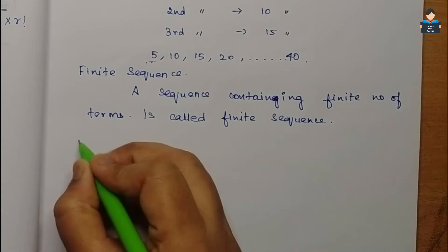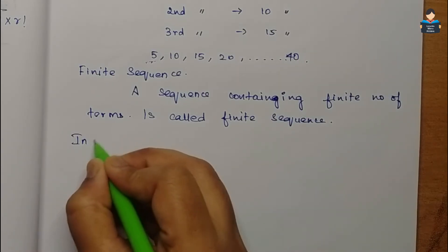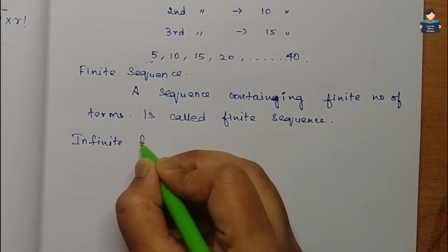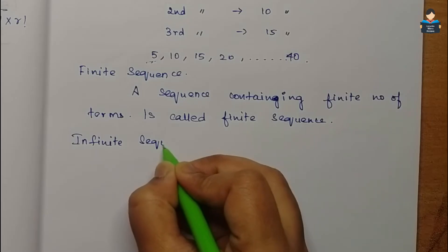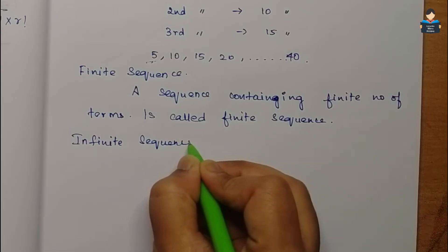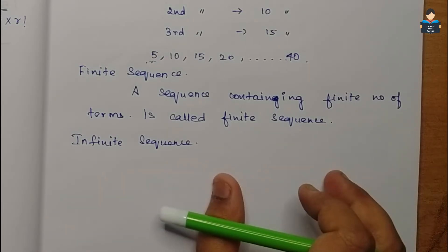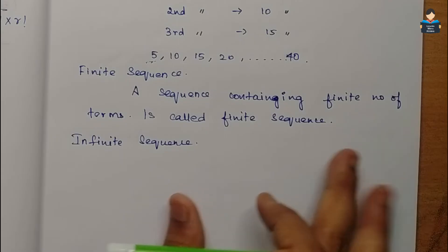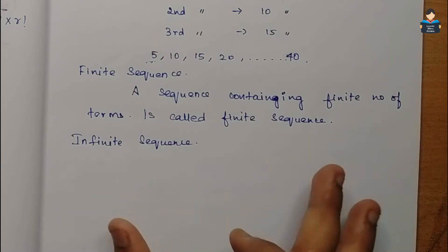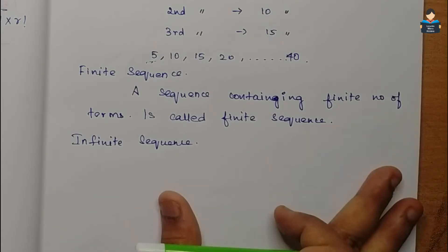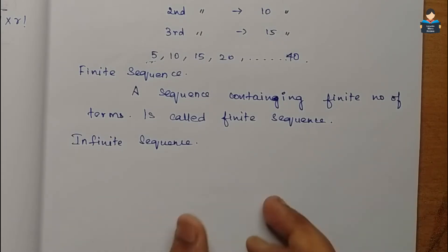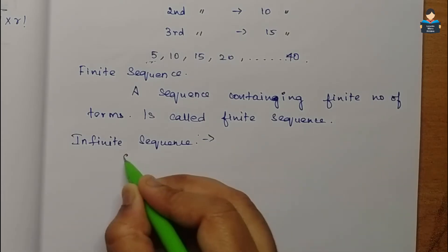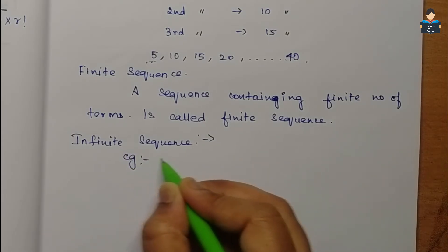Now we will see the infinite sequence. A sequence whose last term we cannot determine is an infinite sequence. The book example for this is the division of 10 by 3.